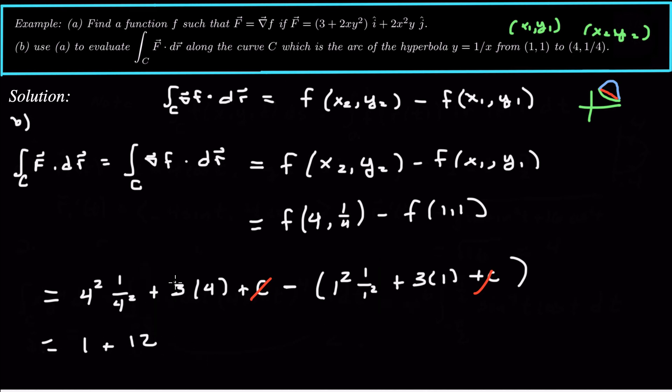Okay, sorry. It should have been a plus there, plus 12. Minus, and then parentheses here, we have 4. So we have 1 plus 12 minus 4. That's just 9. And that is the value of our line integral using the fundamental theorem of calculus for line integrals.